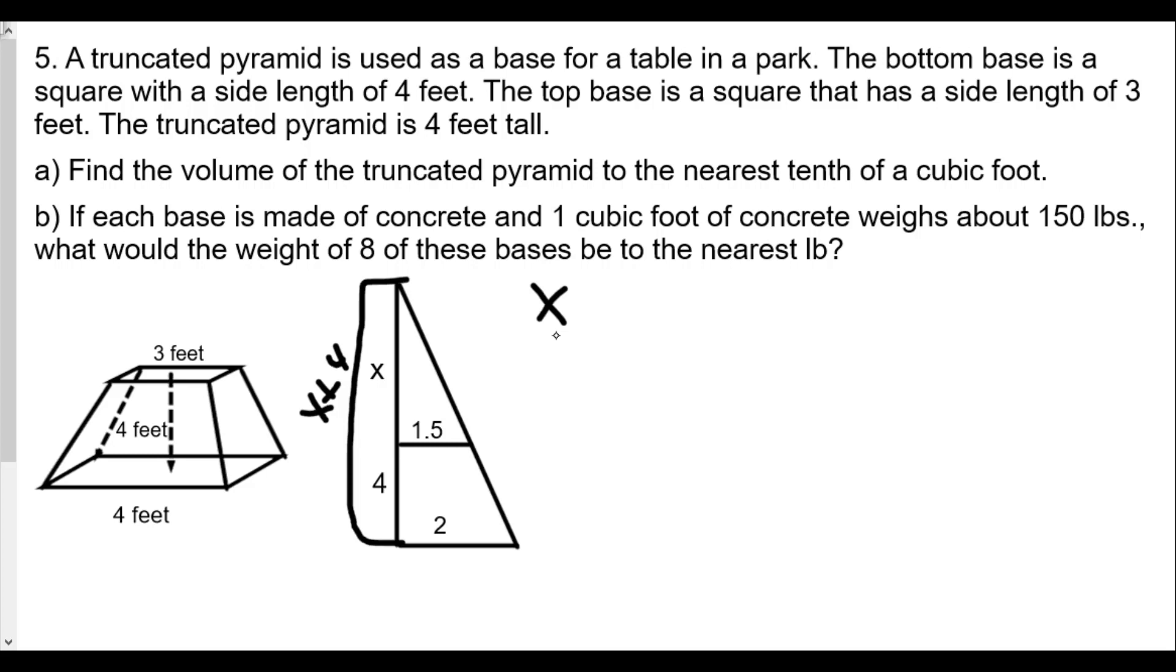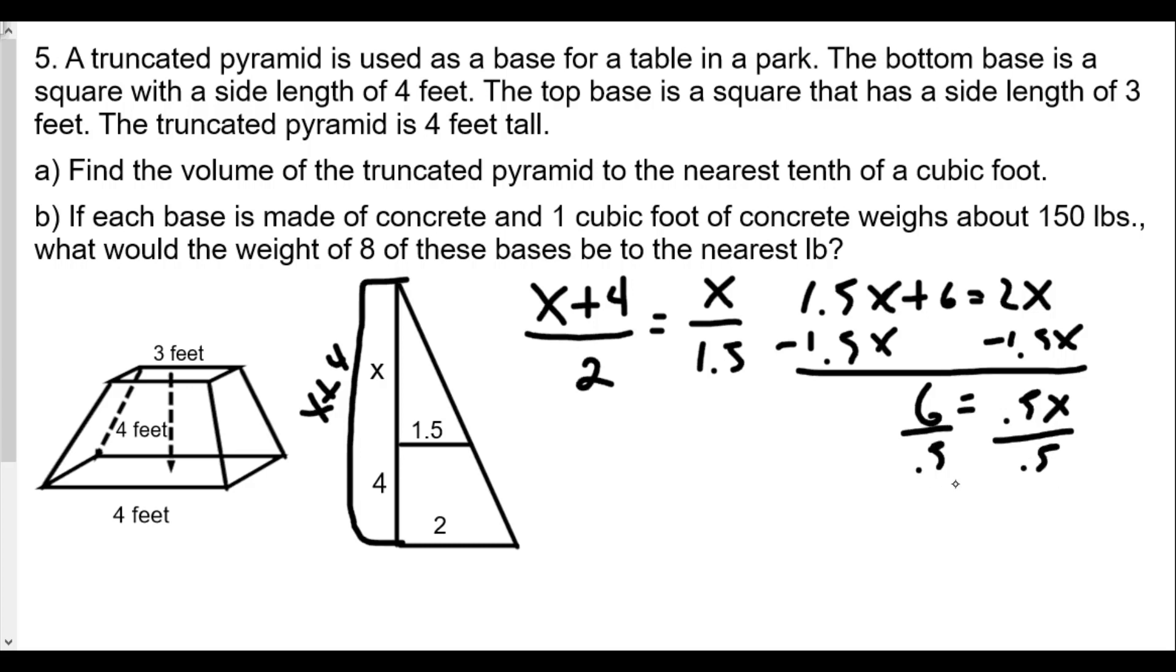We want to create our proportion: x plus 4 over 2 equals x over 1.5. We cross multiply and get 1.5x plus 6 equals 2x. Now we subtract 1.5x on both sides and get 6 equals 0.5x. If you divide both sides by 0.5, you should get x equals 12.